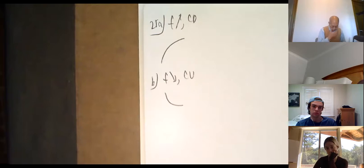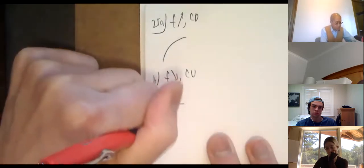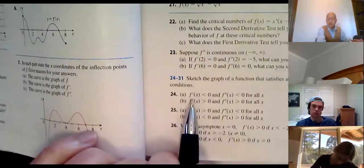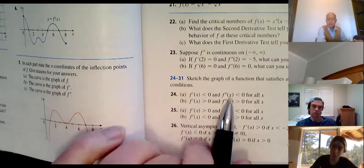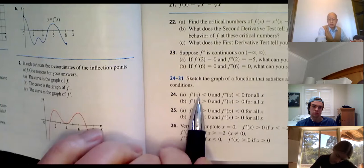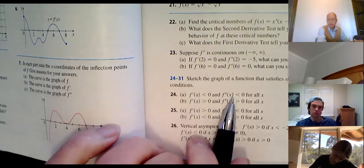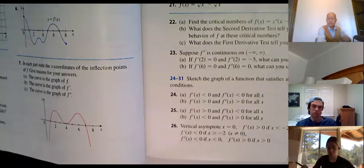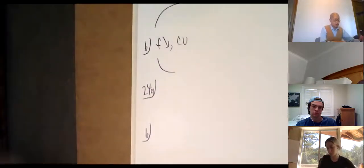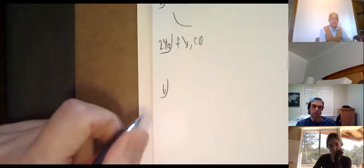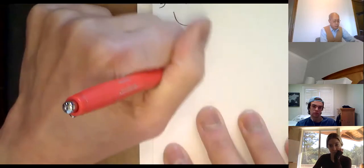Let me also do number 24: f′ < 0 and f″ < 0. Decreasing and concave down — so the function is going down in an upside-down U shape.